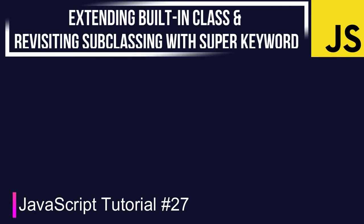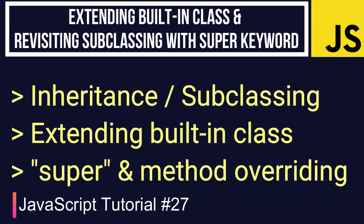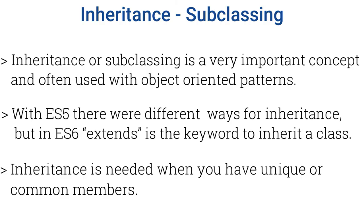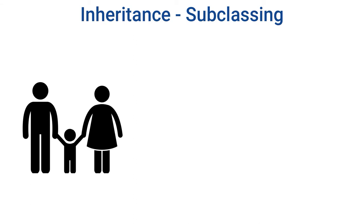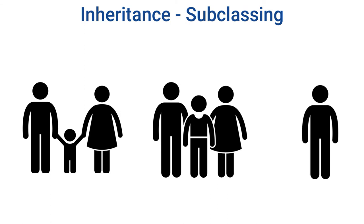In this section we are going to discuss about inheritance, subclassing and extending built-in classes. Inheritance or subclassing is one and the same thing in object-oriented JavaScript. It is a very important concept, often used with object-oriented patterns. With ES5 there were different ways of inheritance, but in ES6 'extends' is the keyword to inherit a class. Inheritance is needed when you have common or unique members — for example, you as a child have inherited properties from a parent.